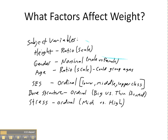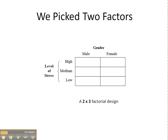Students took a look at the list of variables that might affect a person's weight, and as a class we chose two variables to focus on. The variables were gender, which is a nominal variable with levels male and female, and also level of stress, with possible levels of low, medium, and high — which is ordinal because the categories can be ranked.